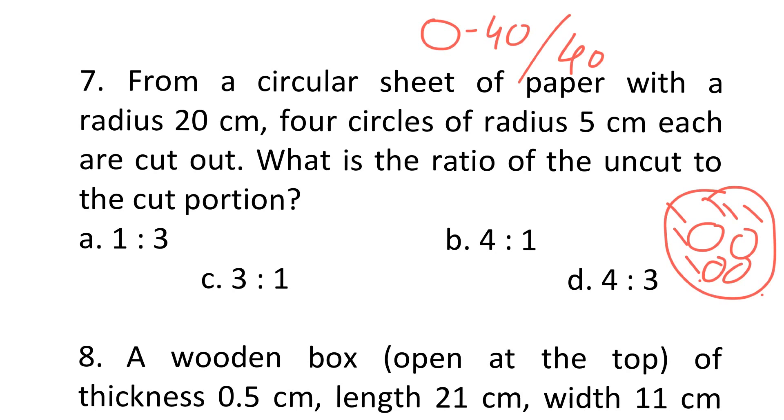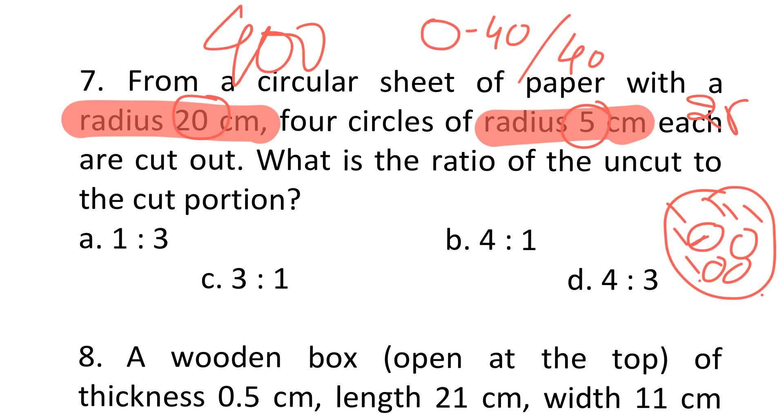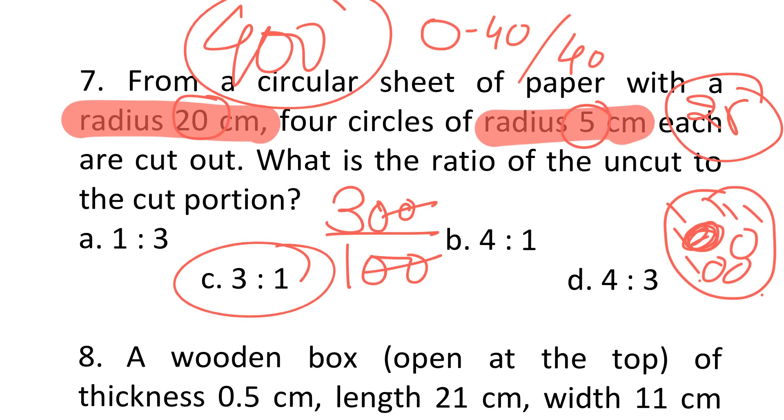I can use the formula pi r square and solve this question, but if I want to avoid the formula - bigger radius is 20 centimeters and small radius is 5 centimeters. Since area formula is pi r square, bigger circle r square only, 20 square would be 400 and 5 square will be 25. So one small circle area is 25 and bigger circle area is 400. I cut four small circles, 25 each, 4 into 25 is 100. 100 gone out of 400, so remaining is 300 which is uncut divided by cut is 100, so the ratio is 3 to 1. 30 seconds to get the answer without even touching the pen.